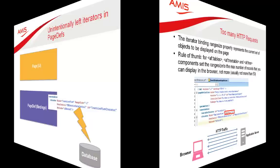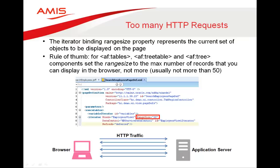Another item in the category too often is too many HTTP requests. This is often caused by an inefficient value of the iterator binding range size property. Normally, the range size corresponds to the fetch size property of your view object and represents the current set of rows displayed on your page. A rule of thumb is to set the range size to the maximum number of records you can display in your browser and not more. Setting it too low causes more HTTP requests than needed.